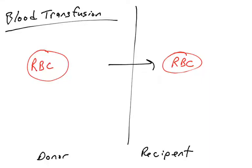Let's talk about blood transfusions. In this unit we discuss the factors involved in successful and unsuccessful tissue transplantation. The object is for a recipient to receive blood from a donor, and what would be ideal is for the recipient's immune system not to attack the red blood cells that come from the donor.